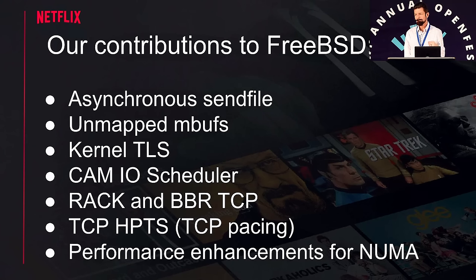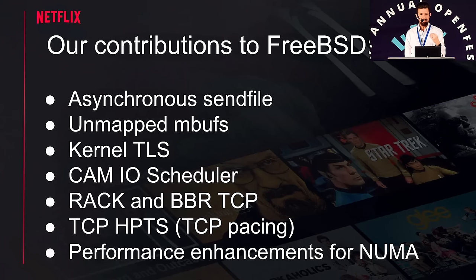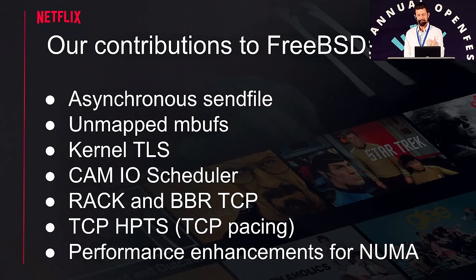We contributed the RAC and BBR TCP stacks. BBR was done by Google initially in Linux and ported to FreeBSD by my colleague Randall Stewart. It's also the congestion control algorithm used in QUIC. We actually use RAC more, which is similar in spirit and was written entirely at Netflix by Randall Stewart. We've also contributed the TCP pacing system, HPTS. The point is that if we send data as fast as possible — say 100 gigabits a second to your cable modem in a 64K or 120K chunk — your cable modem's buffer might only be 32K, so you'd drop most of it and we'd have lots of TCP retransmits. The pacing system delivers data more smoothly and avoids packet loss.